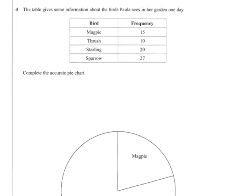We're given a table that gives us some information about birds that Paula sees in her garden one day. And we've got to complete an accurate pie chart.